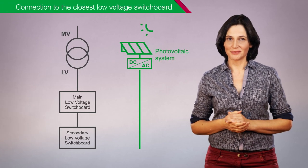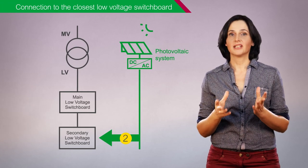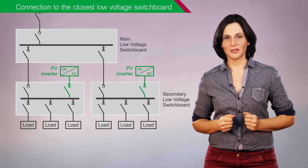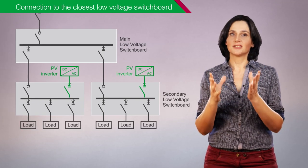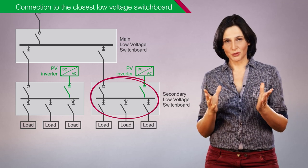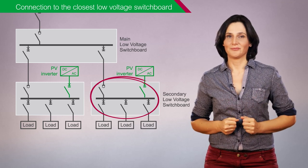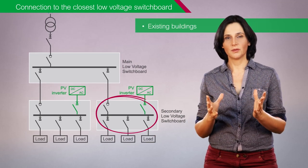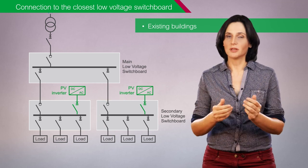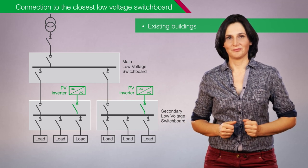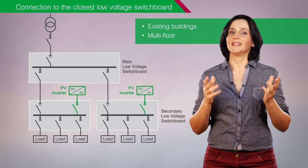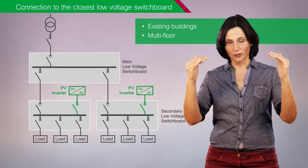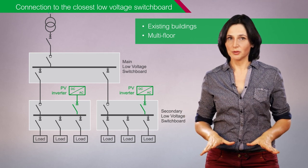Second architecture. In this architecture, the photovoltaic production, here presented with a single photovoltaic inverter, is connected to a secondary low voltage switchboard, usually the closest one. This architecture is suitable for existing buildings where the photovoltaic production is much lower than the building consumption. It's also used for multi-floor existing buildings where the photovoltaic production, usually on the roof, is far from the main low voltage switchboard.